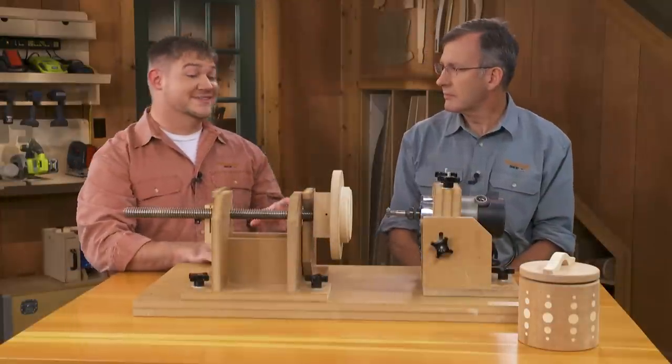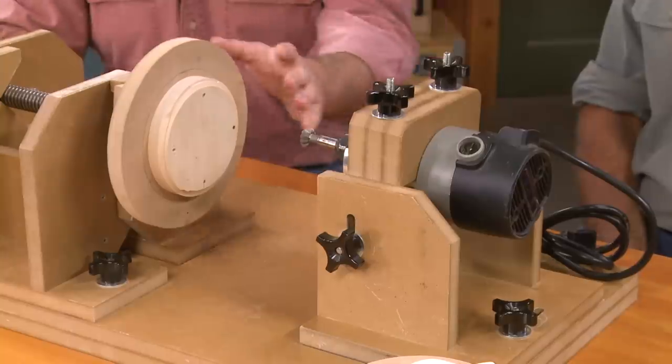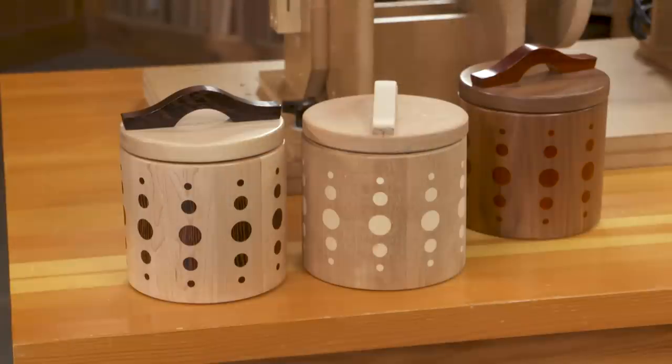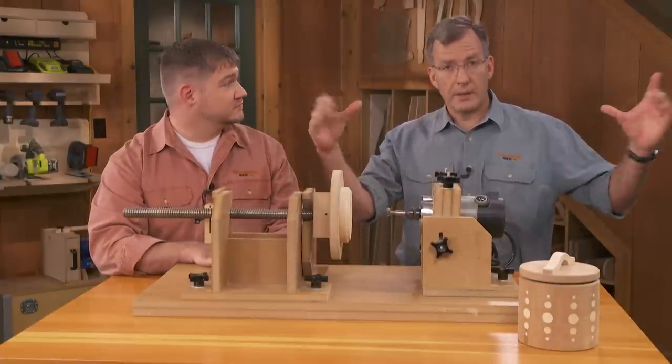One thing I think is really cool is you can cut threads on projects of almost any size on this thing. As long as you can hold it to the platen, you can cut threads. It doesn't matter if it's our smaller canisters. You can go bigger with them, smaller with them. You can go teeny-tiny, or if you want to redesign this jig, you can make a canister that big.